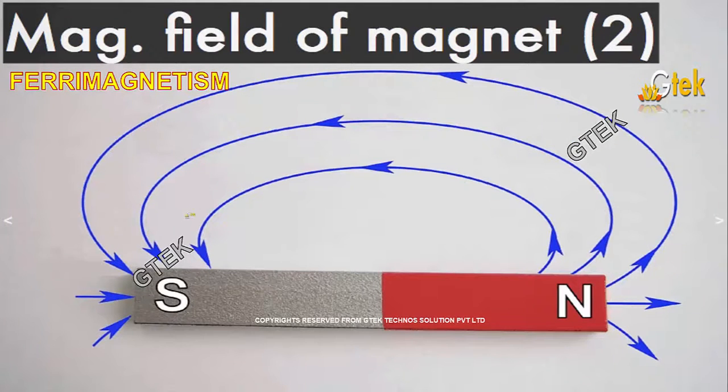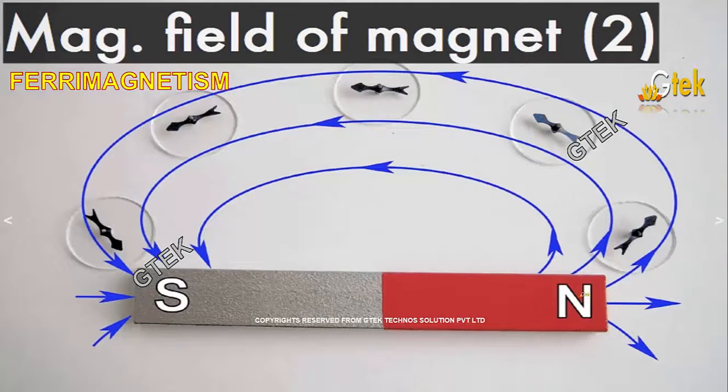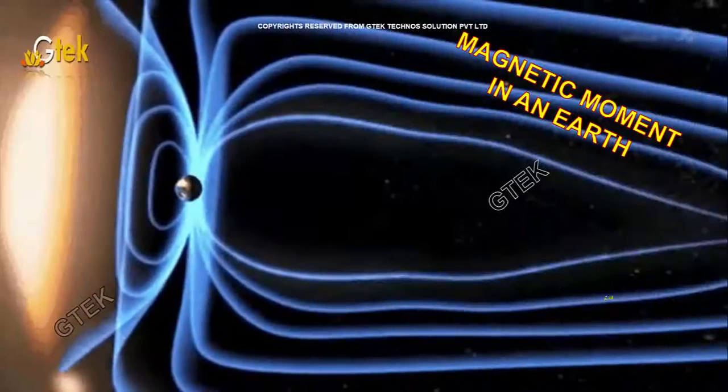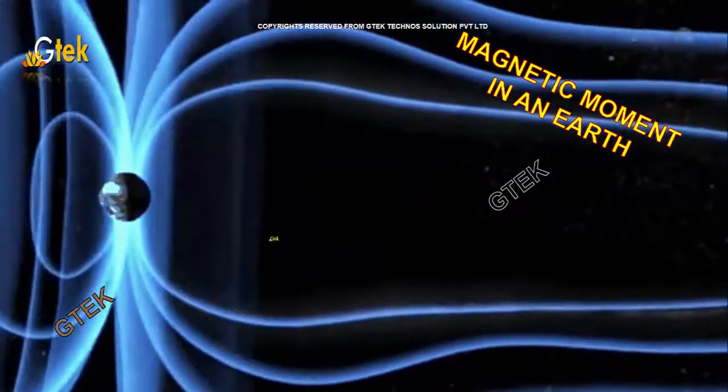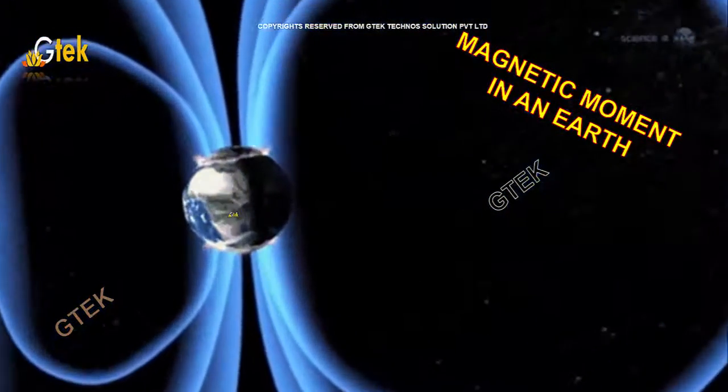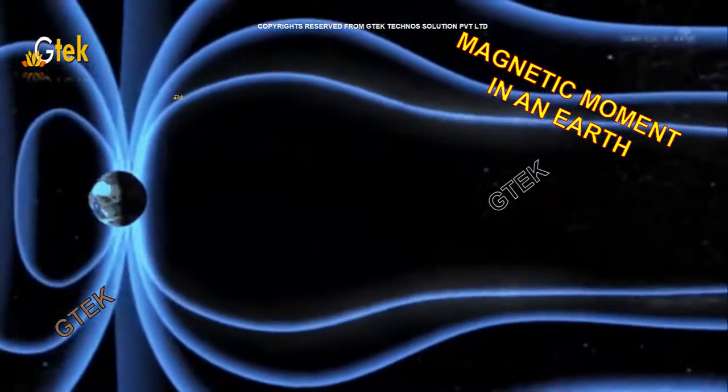This identifies the field of magnet. This is the magnetic lines of force from a magnet and the magnetic moment in an earth. As you know, Earth is a magnet itself. It's got a field of rotation, so it got a magnetic field effect.